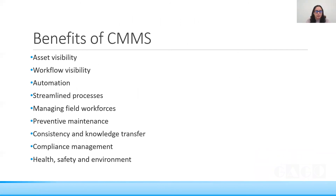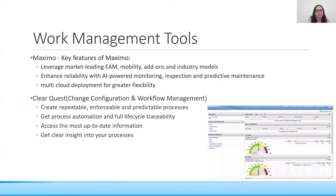The benefits of implementing CMMS include asset visibility — knowing exactly where an asset has been installed — workflow visibility, process automation and streamlining, proper management of field workforce, achievement of maintenance goals, knowledge transfer, and compliance management. With everything in place, rules and regulations are followed, covering health, safety, and environment requirements.